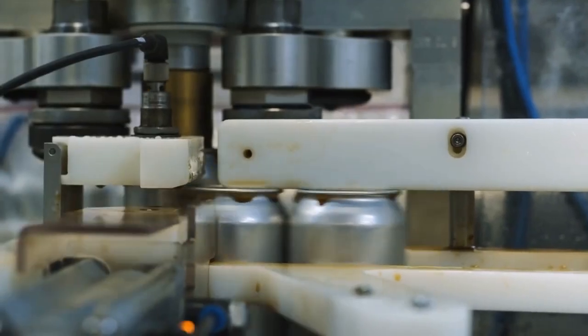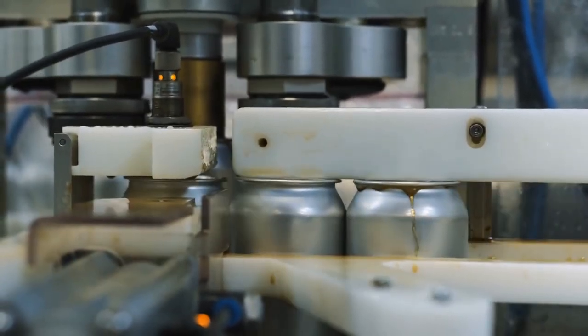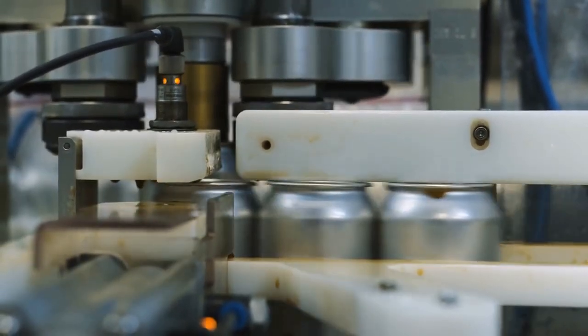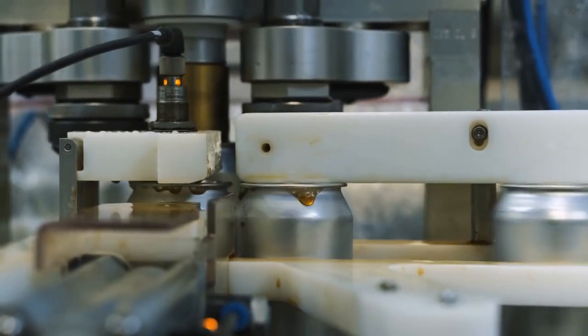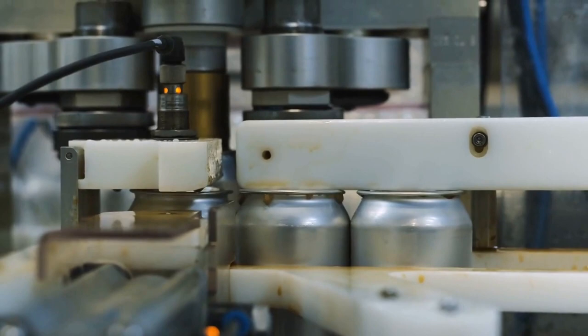After the carbonation process is complete, the cans are sealed to ensure they are airtight and will retain their carbonation. The can sealing machine applies the lid to the can using a process called double-seaming. This ensures a tight seal that won't break or come loose during transportation and storage.